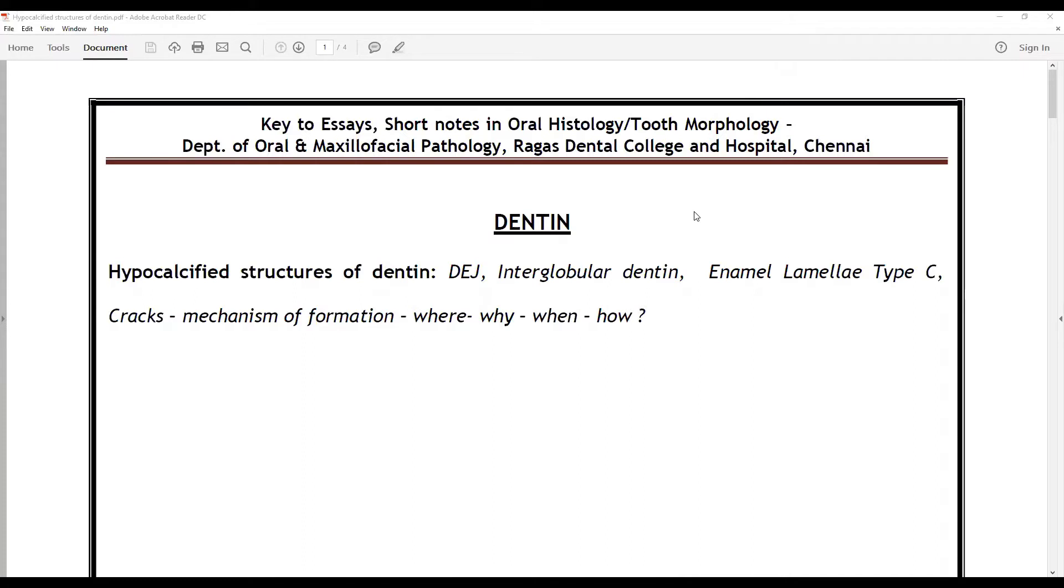In case this is the question for you in your assignments or exams, talk about the DEJ, interglobular dentin, enamel lamella particularly the type C variant, cracks, mechanism of formation of each - where, why, when, how - and the clinical significance.